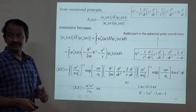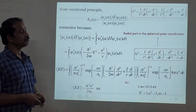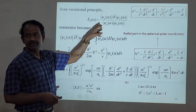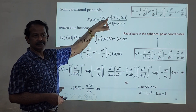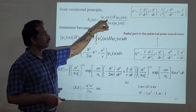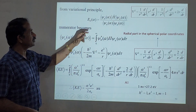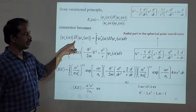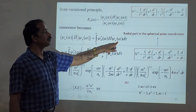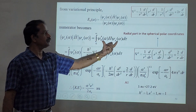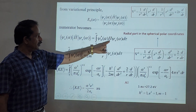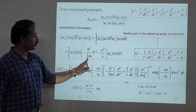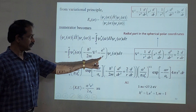Now we will calculate the ground state energy E₀ using the variation principle. The expression is the expectation value ⟨ψ|H|ψ⟩. Taking just the numerator, the Hamiltonian is sandwiched between the wave function and its complex conjugate. We split H into the kinetic energy and potential energy terms.